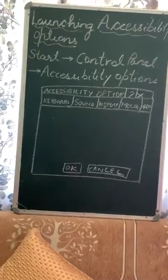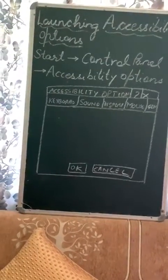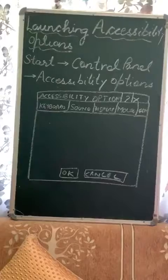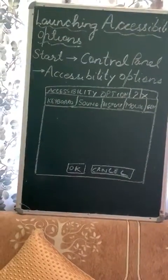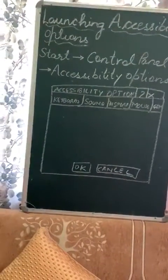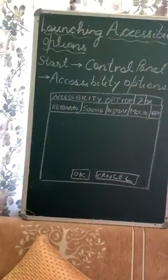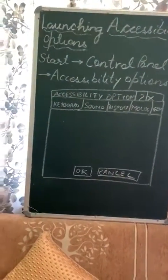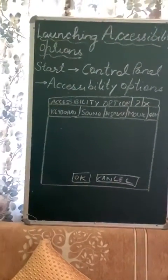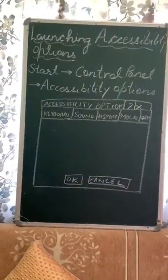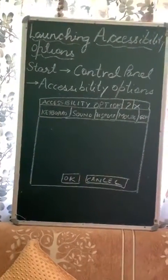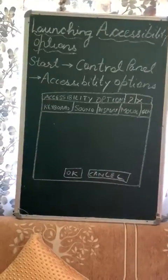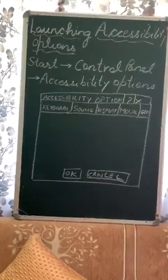To launch or start accessibility options, go to Start, click on the Start button, then Control Panel, then Accessibility Options. If you are using Windows XP, this is the path. Otherwise, you can directly search from the search bar as well. When you go through this path, you will find a dialog box — the name of the dialog box is Accessibility Options.